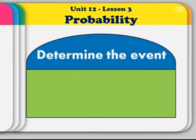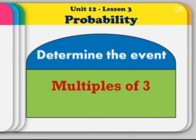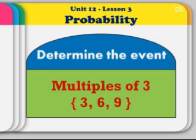We are going to determine the event. The event we are looking for is the event of multiples of 3, which were 3, 6 and 9.